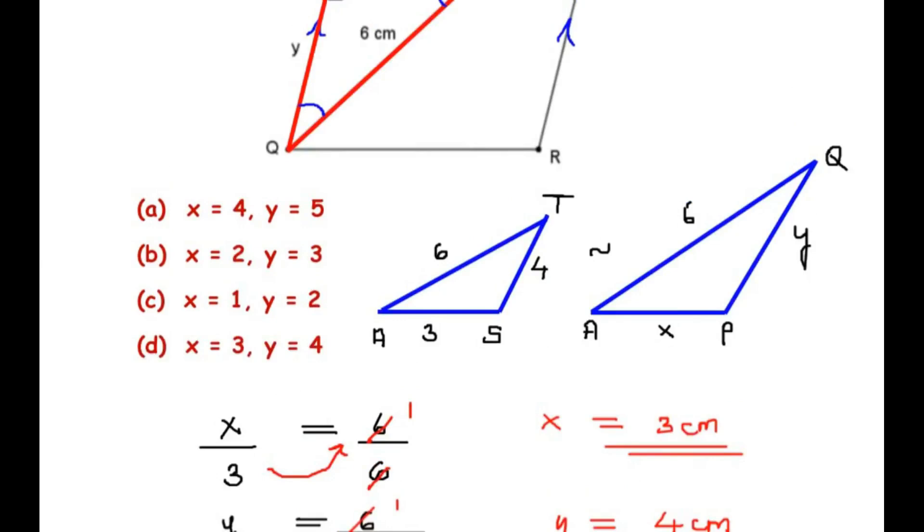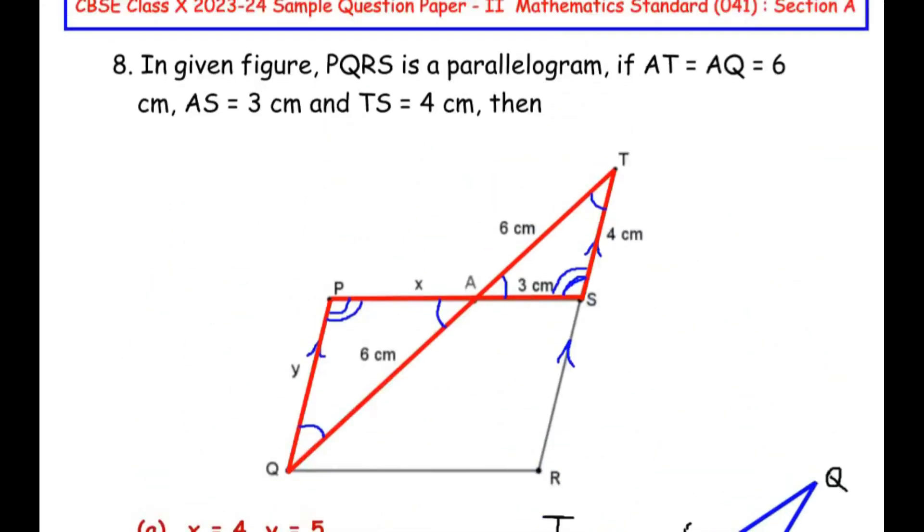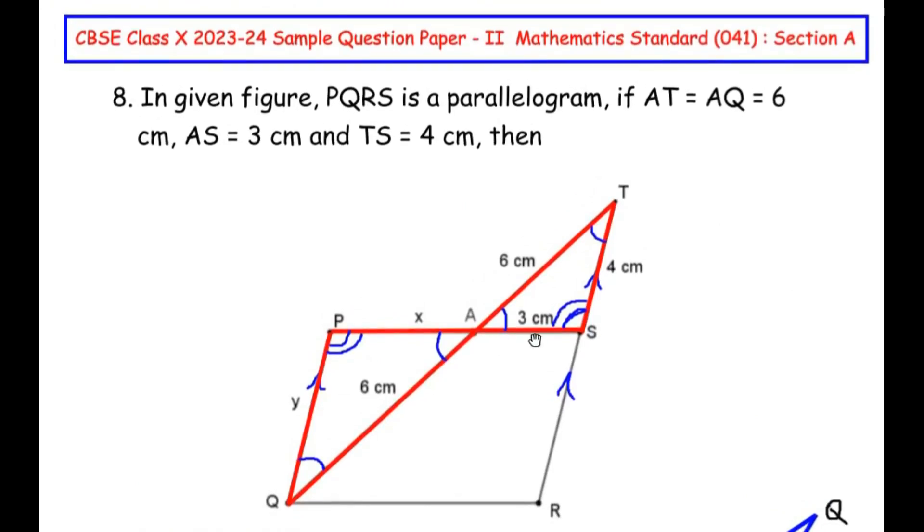So here we can see that it has option D, x equal to 3 and y is equal to 4. So in this example we first established a relationship between the angles using the properties of the parallel lines and the alternating angles related with it, and then we established that the two triangles are similar to each other.